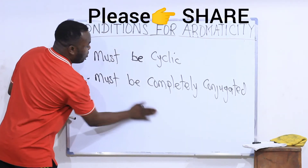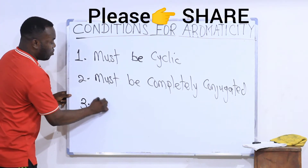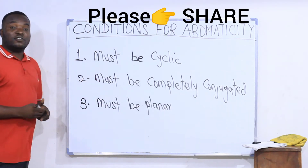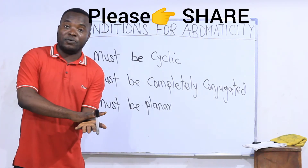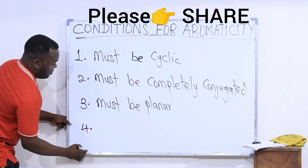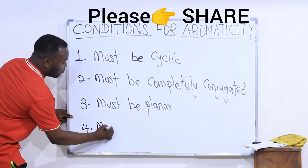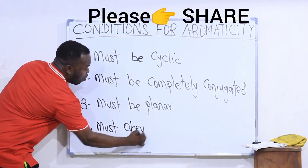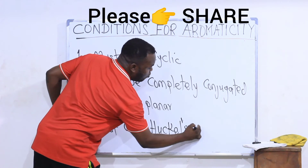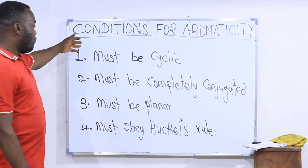Condition number three says the compound or molecule must be planar in shape — it must be flat. The last condition, which is the ultimate one, says that the compound must obey Hückel's rule of aromaticity. So these are the four conditions necessary for a compound to be called an aromatic compound.